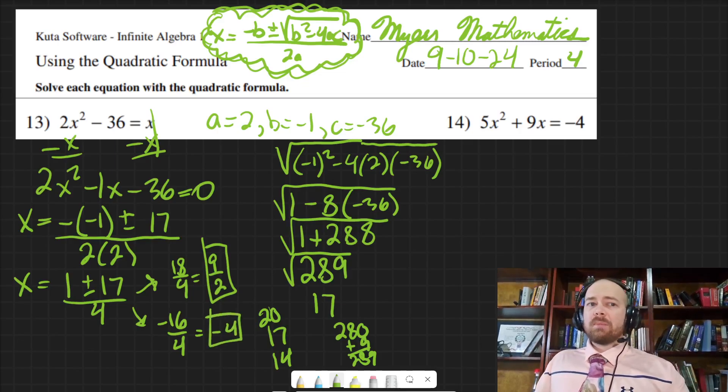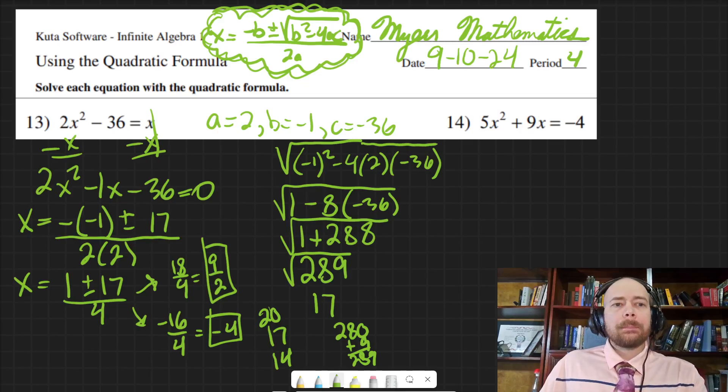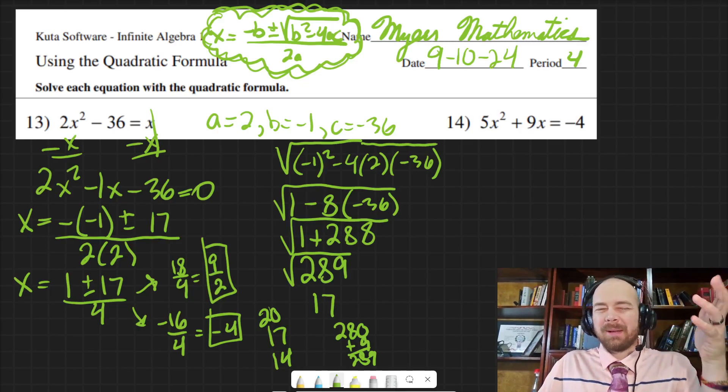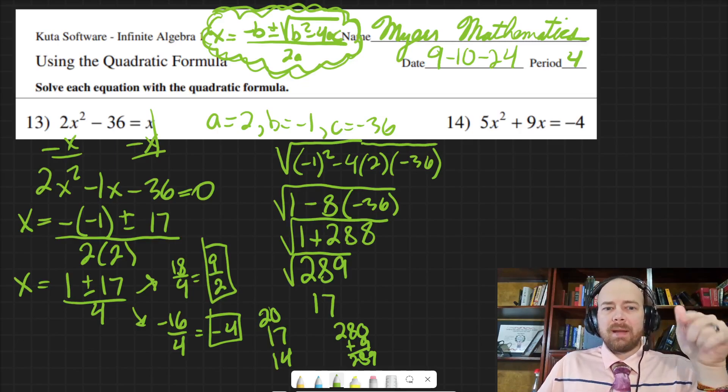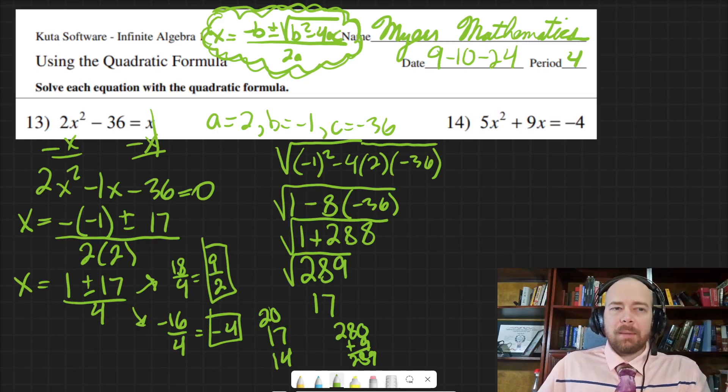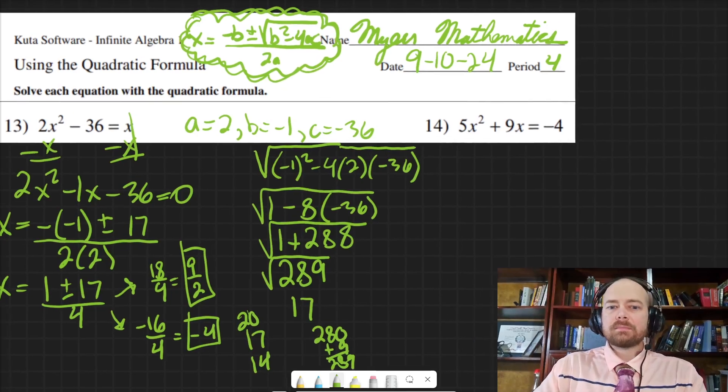And then that simplifies into 1 plus 17 is 18 fourths, which is nine halves. And then 1 minus 17 would be the opposite of 17 minus 1. If you switch the order of a subtraction problem, you get the opposite of the answer. 17 minus 1 is 16. So that's negative 16. And that would be negative 4. And if you wanted to check them, you can plug them back in to make sure they work. So there we go. We have the two solutions.